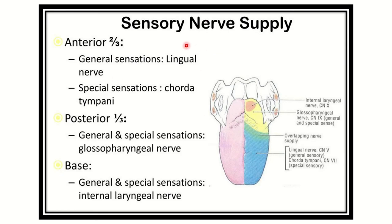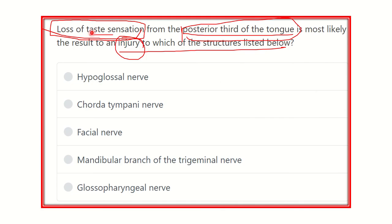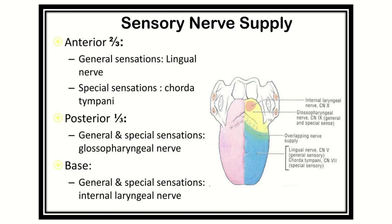Let's look at the sensory innervation of the tongue — both general and special sensation. Taste is a special sensation. In the anterior two-thirds of the tongue, the special sensation (taste) is supplied by the chorda tympani of the facial nerve. The general sensation — pain and temperature — is supplied by the lingual nerve.